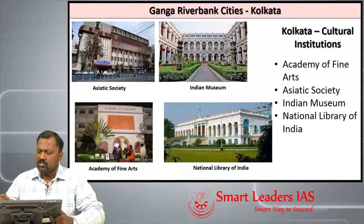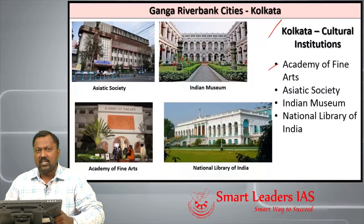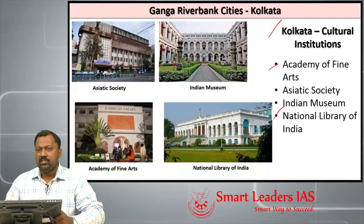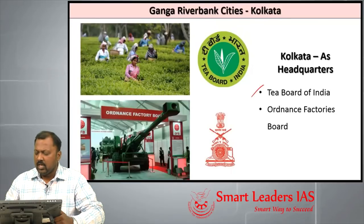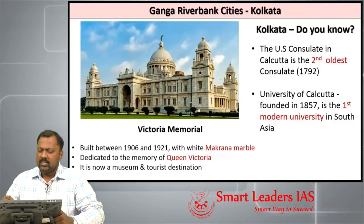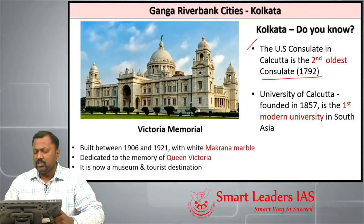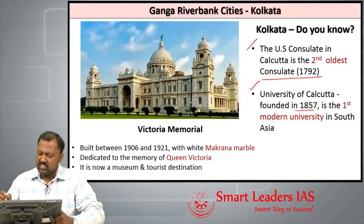Other cultural institutions in Kolkata include the Academy of Fine Arts, Asiatic Society, Indian Museum (the National Museum), and the National Library of India. Kolkata is also headquarters to the Tea Board of India and Ordnance Factory Board of India. The second US consulate in the world was established in Kolkata in 1792, making it the second oldest consulate in the world.